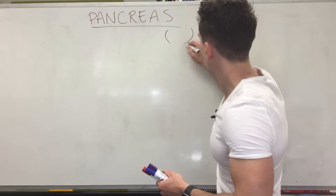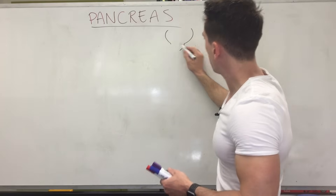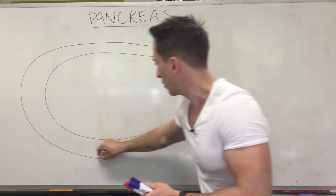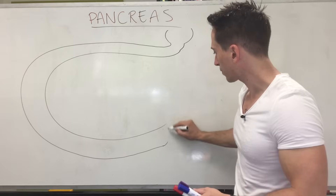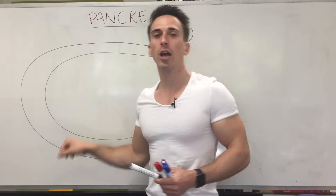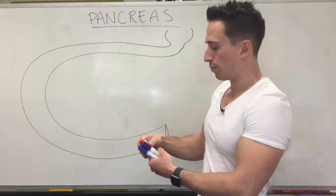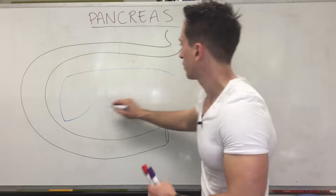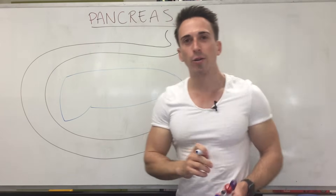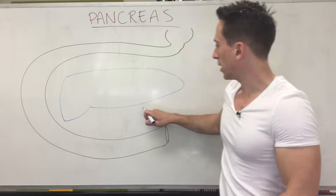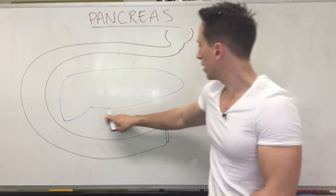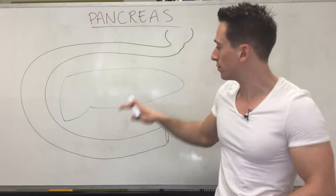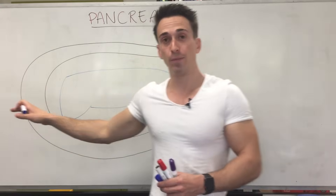First, we're going to draw the stomach and the pyloric sphincter leading into the duodenum, and then we're going to exaggerate the duodenum, which is the first part of the small intestines. Within the C-shape of the duodenum, that's where we're going to place the pancreas. The pancreas has a head, a body, and a tail, and there are a number of ducts within the pancreas that lead into the duodenum.